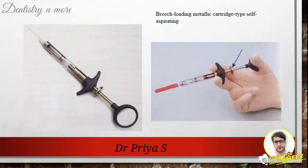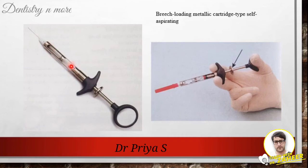With commonly used breech-loading metallic cartridge type syringes, an aspiration test must be carried out purposefully by the administrator before or during drug deposition. However, studies have shown that many dentists don't purposefully perform an aspiration test before injection. Therefore, to increase the ease of aspiration, self-aspirating syringes were developed. These syringes use the elasticity of the rubber diaphragm in the anesthetic cartridge to obtain the necessary negative pressure for aspiration.